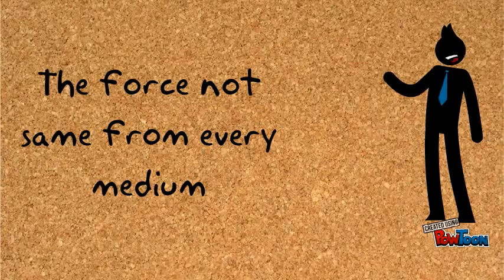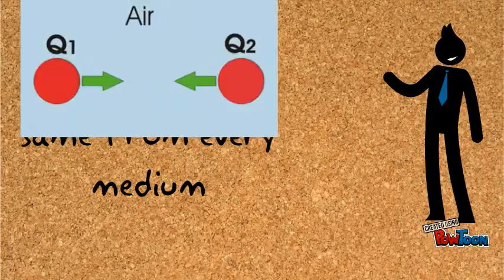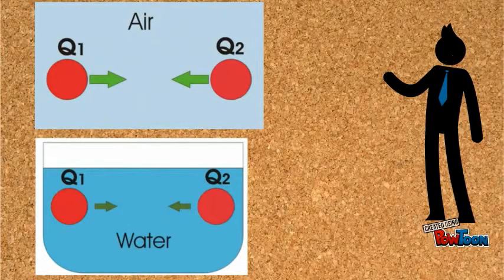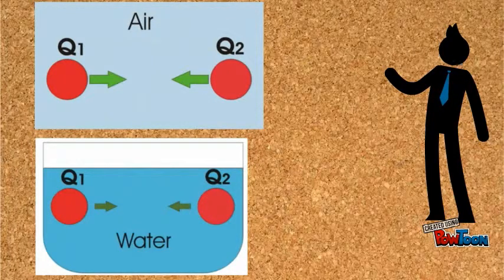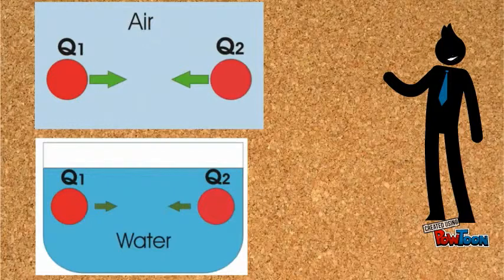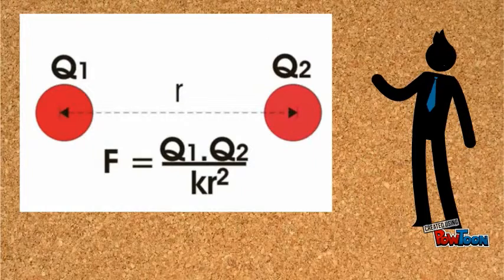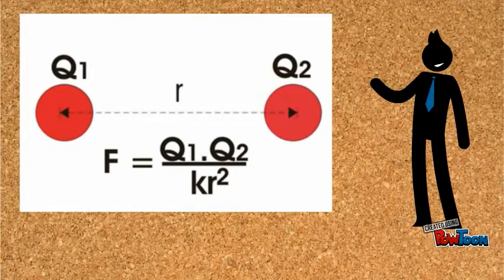It is also obvious that this force is not same for every medium. For example, if the bodies are kept in air, the force is different from the force while they are kept in water. Variation of force according to the medium is determined by a constant, say this is K.